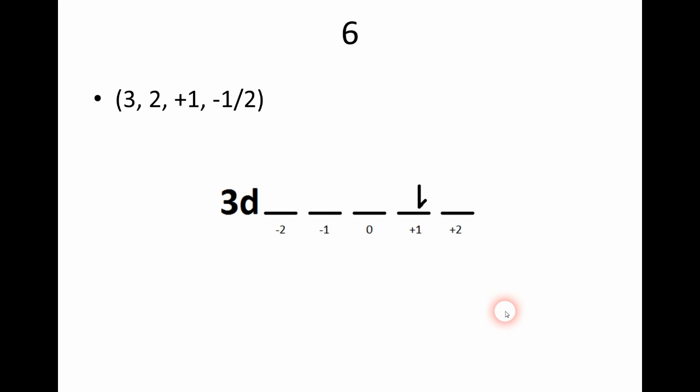Number six asks us to do the same for an electron whose quantum numbers are three, two, positive one, and negative one-half. A three because N equals three. D because L equals two. The electron is in the orbital right of the middle one because M sub L is positive one. And the arrow is pointing down because M sub S is negative one-half.